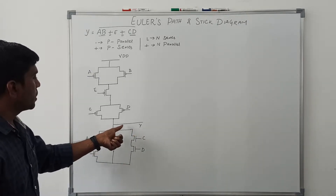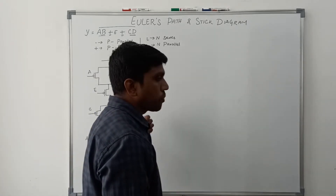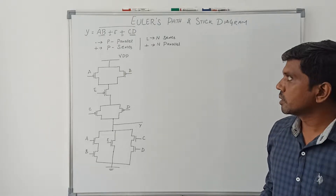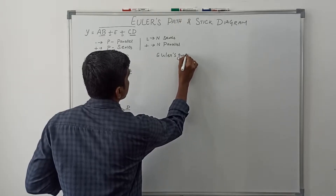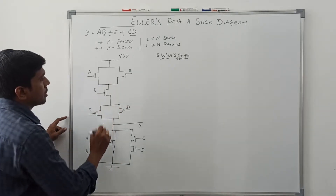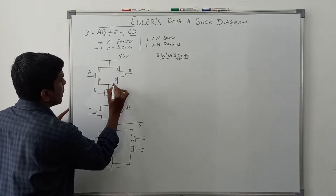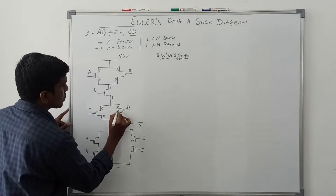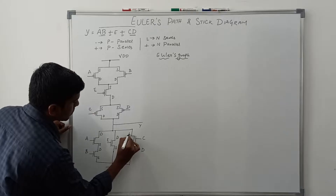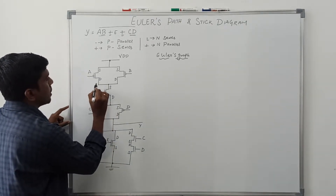Now I connect the pull-up network and pull-down network. From the output point I get the output — this is the simple CMOS structure for the Boolean expression. After drawing this logic diagram, I am going to find the Euler path for both the pull-down network and pull-up network. Any one of the transistors I consider as a starting point. Before that, I assign the source and drain terminals: source, drain, source, drain for each transistor in both networks.